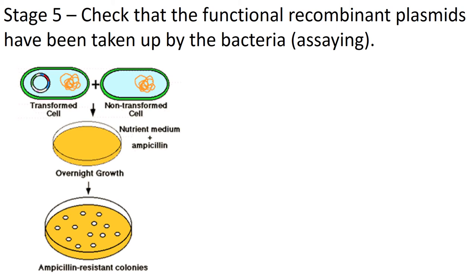So along with the gene of interest, you also put in a gene for resistance to an antibiotic. Then you grow these bacteria on an agar plate — essentially bacteria food — that also contains the antibiotic ampicillin. Ampicillin kills bacteria without the resistance gene. However, our plasmid with our desired gene also has the ampicillin resistance gene in it, so those bacteria will all survive. When we come back and the plate is covered in bacteria, we know they all have our plasmid with the desired gene in it. This is called assaying.